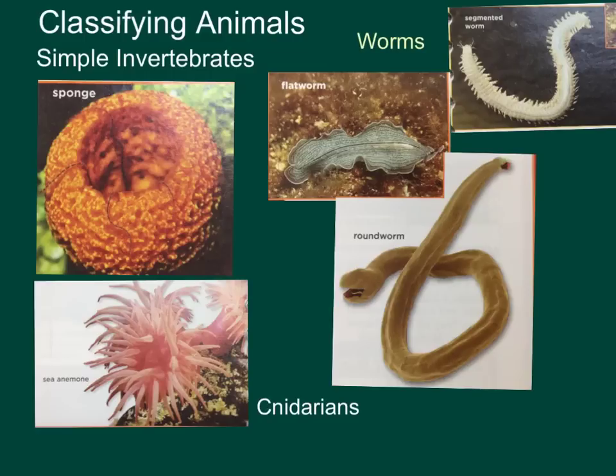What we know from 4th grade as well as from previous lessons in this chapter is that animals were classified into two groups: vertebrates and invertebrates. Vertebrates have a backbone, and invertebrates are animals that do not have a backbone.